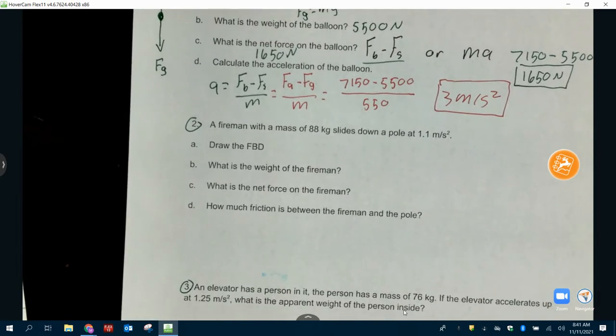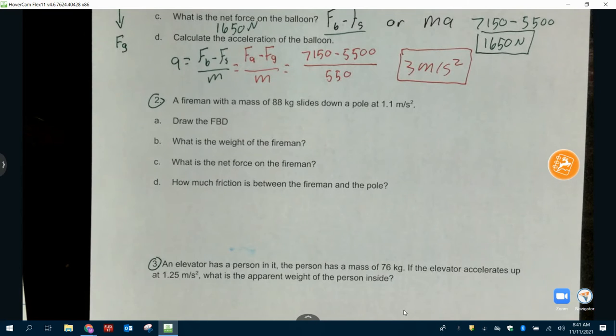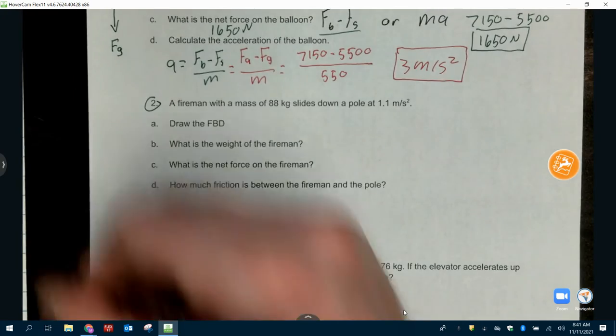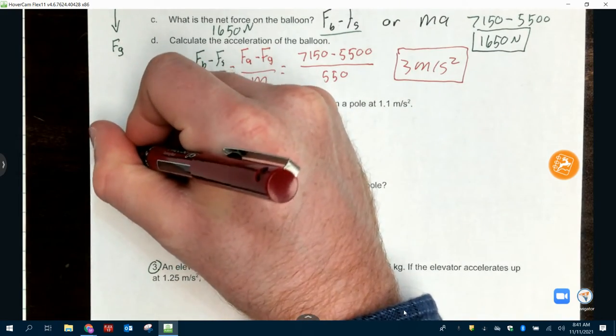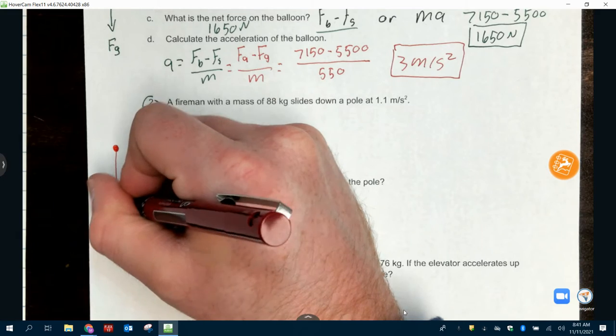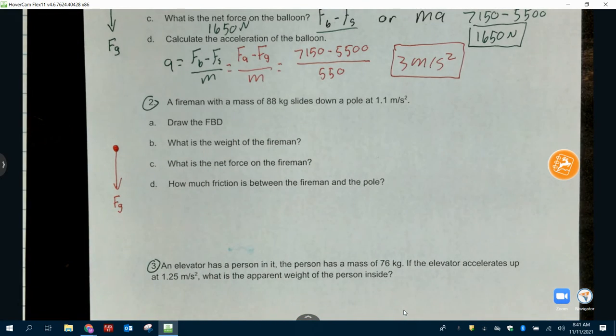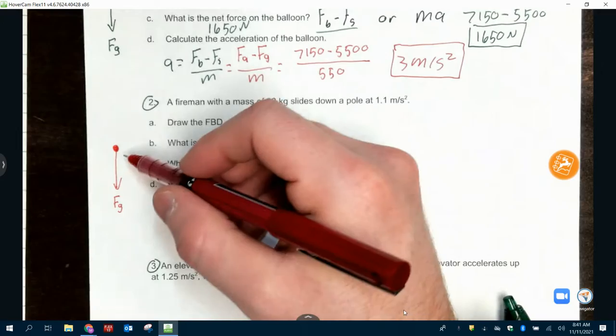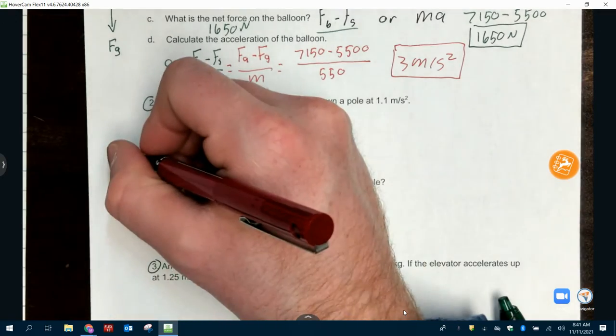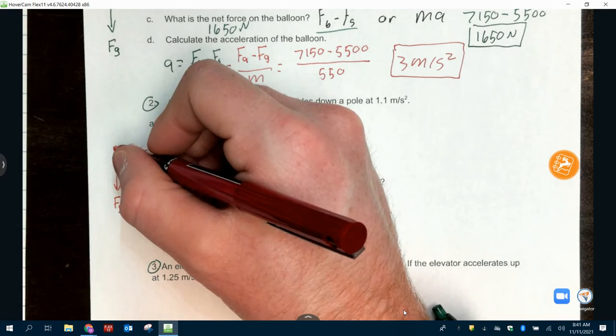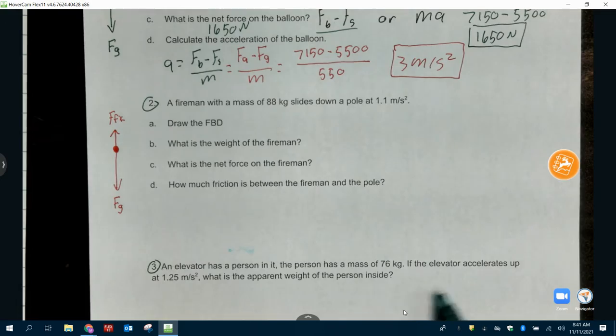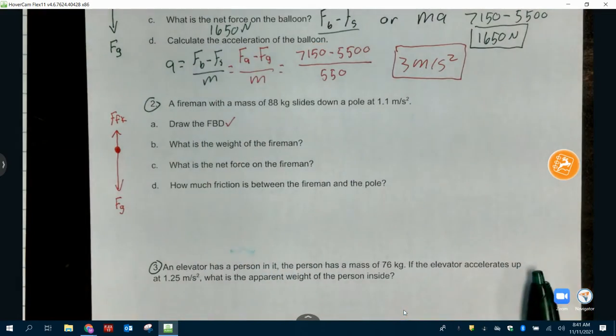Questions there? Seem pretty easy? Number two. Fireman with a mass of 88 kilograms slides down a pole at 1.1 meters per second squared. Gravity pulls him down. What opposes a fireman sliding down a pole? Friction. Friction. He's in contact with the pole. It's opposing it because depending on how tight he's holding on to it. So, is friction going to be bigger or smaller? Smaller because which way is he going? Down. So, F_FK goes this way. Free body diagram. Done.